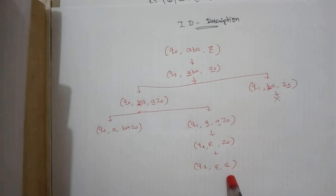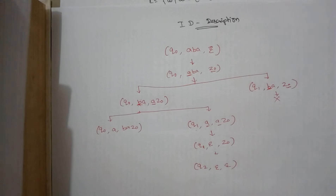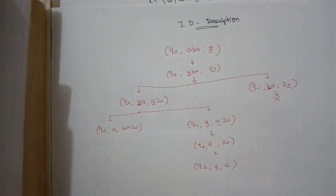This is your non-deterministic push-down automata. The palindrome problem cannot be solved using a deterministic push-down automata, so we say that a non-deterministic push-down automata is more powerful than a deterministic push-down automata. Thank you.